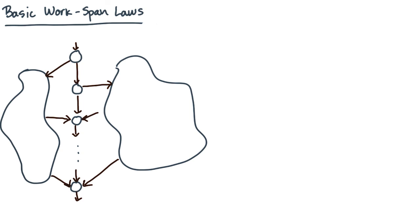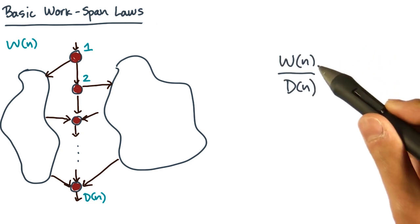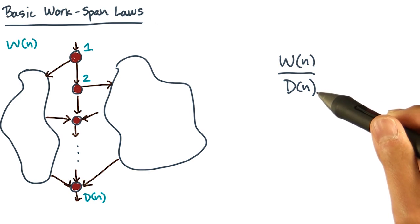Now, suppose the DAG has work W of N and span D of N. The ratio of work to span, or W divided by D, has a special interpretation. It basically measures the amount of work per critical path vertex.